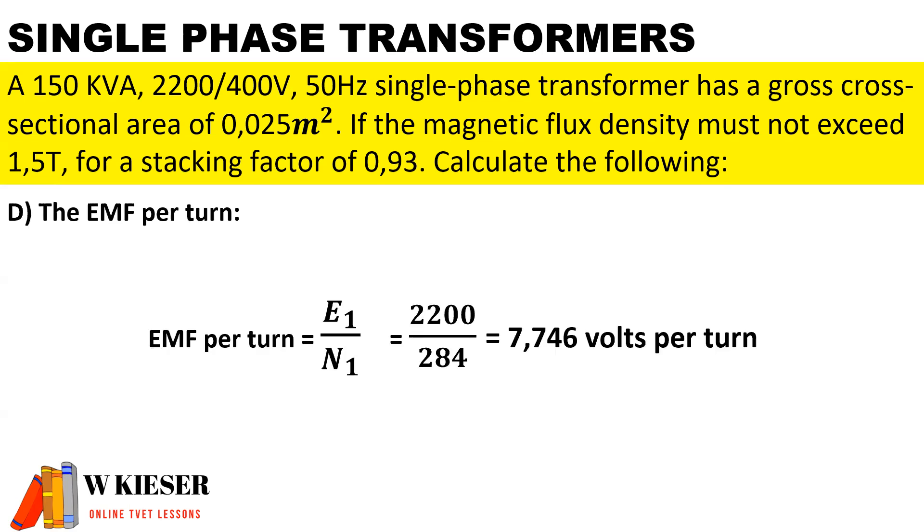To calculate the EMF per turn, you can use the primary side or the secondary side, but if you use the primary side, it'll be the primary EMF of 2200 divided by the number of turns on the primary side, which was 284, which implies we have 7.746 volts per turn.